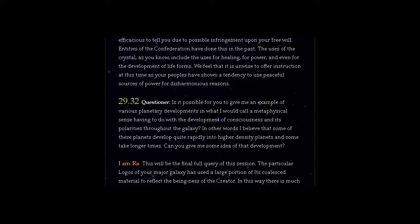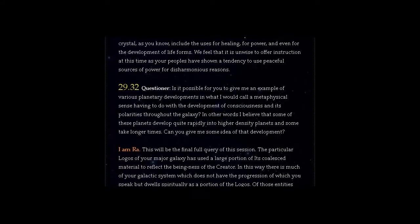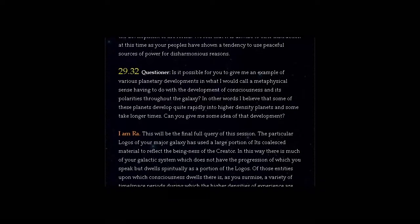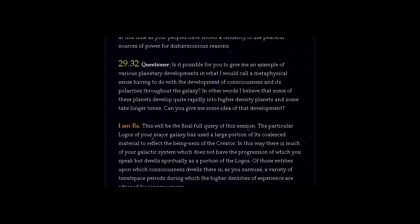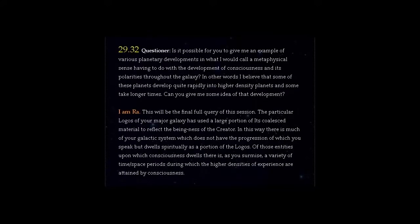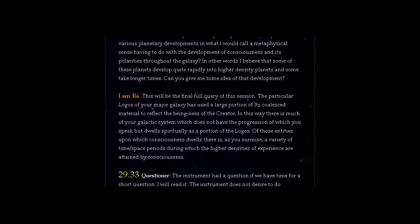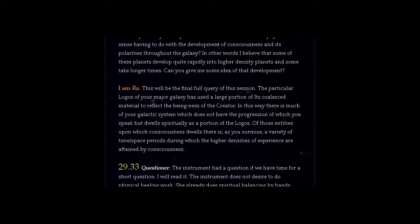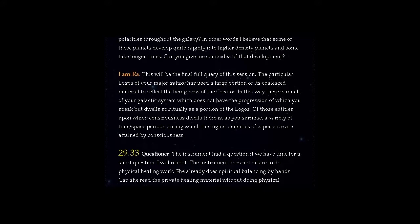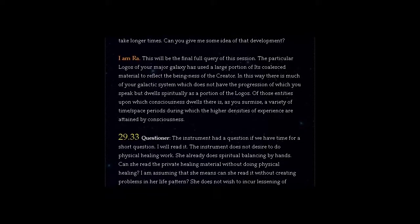Question 29.32. Questioner, is it possible for you to give me an example of various planetary developments in what I would call a metaphysical sense having to do with the development of consciousness and its polarities throughout the galaxy? In other words, I believe that some of these planets develop quite rapidly into higher density planets and some take longer times. Can you give me some idea of that development? Answer, I am Ra. This will be the final full query of this session. The particular logos of your major galaxy has used a large portion of its coalesced material to reflect the beingness of the creator. In this way there is much of your galactic system which does not have the progression of which you speak but dwells spiritually as a portion of the logos. Of those entities upon which consciousness dwells there is, as you surmise, a variety of time-space periods during which the higher densities of experience are attained by consciousness.